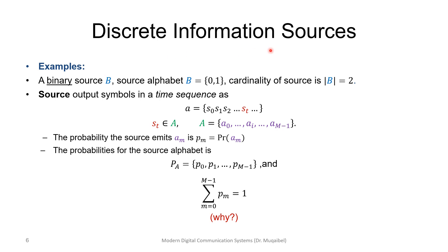As an example, a binary source B has two elements and cardinality two. Looking at the time sequence of outcomes of a discrete information source, we have s₀, s₁, s₂, ... each belonging to one element from the alphabet a₀ up to a_{M-1}. Each element has an assigned probability — in a binary example with equal probability both become 0.5. In general we assign probabilities to each symbol, such as 0.25 and 0.75.